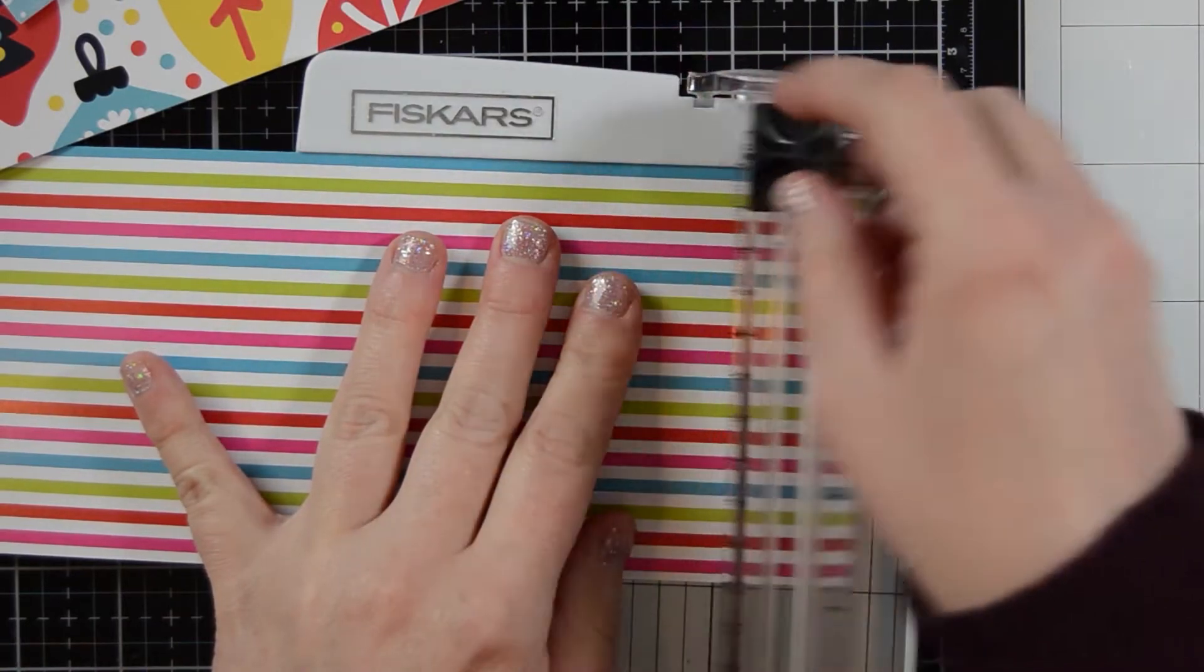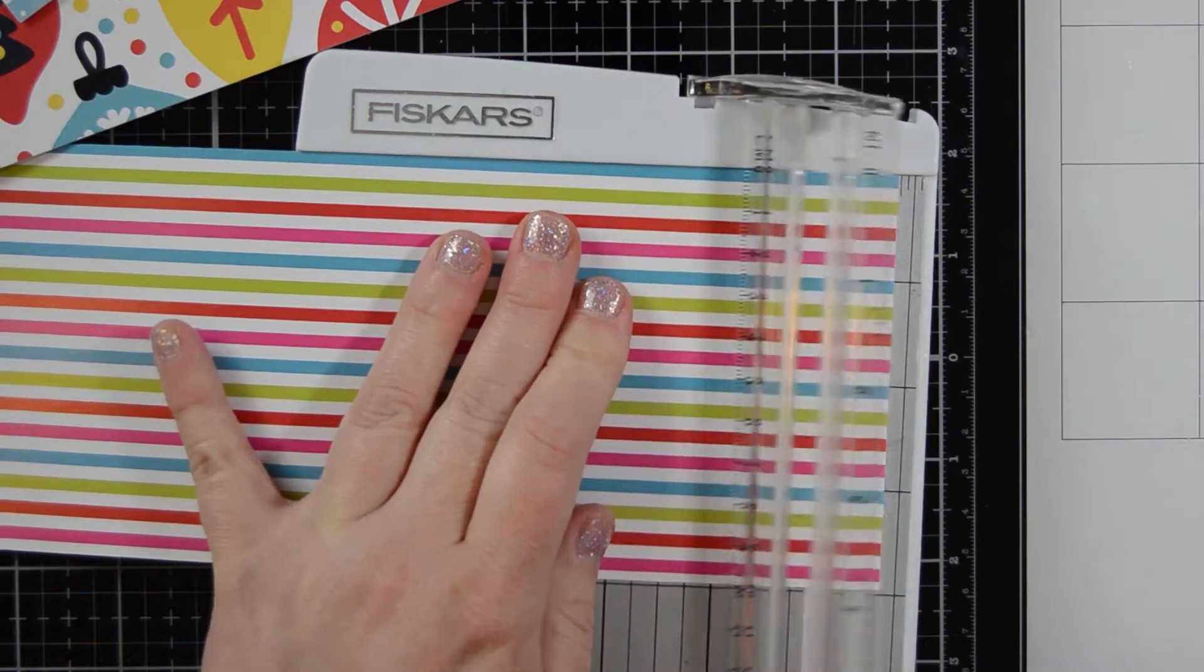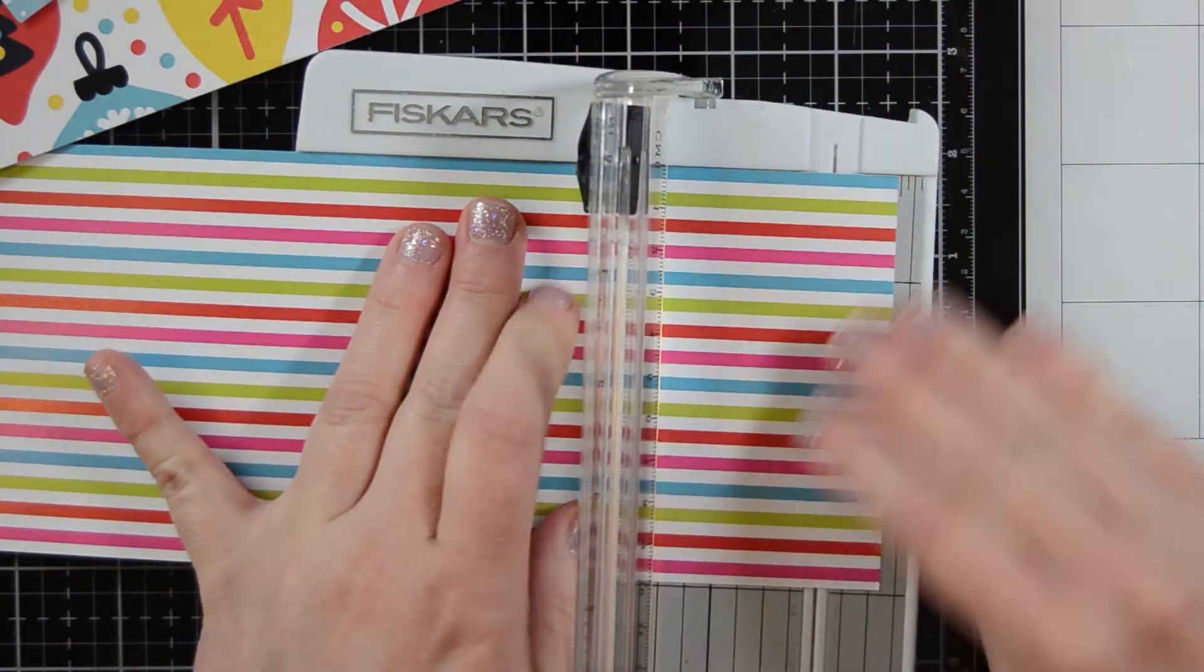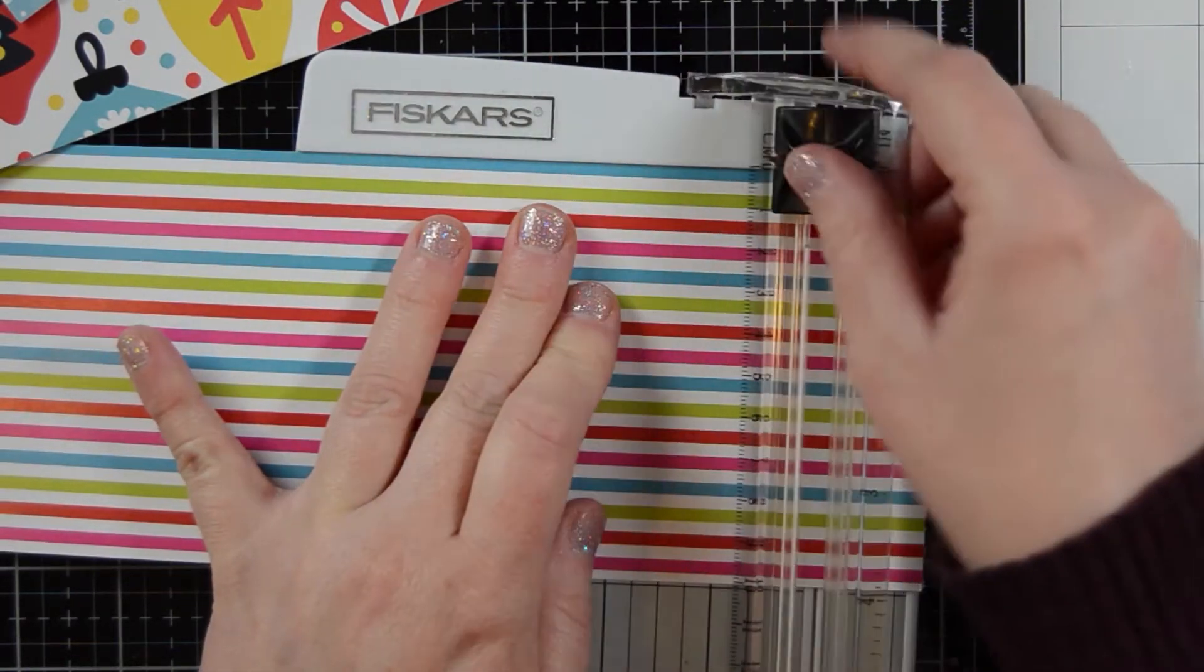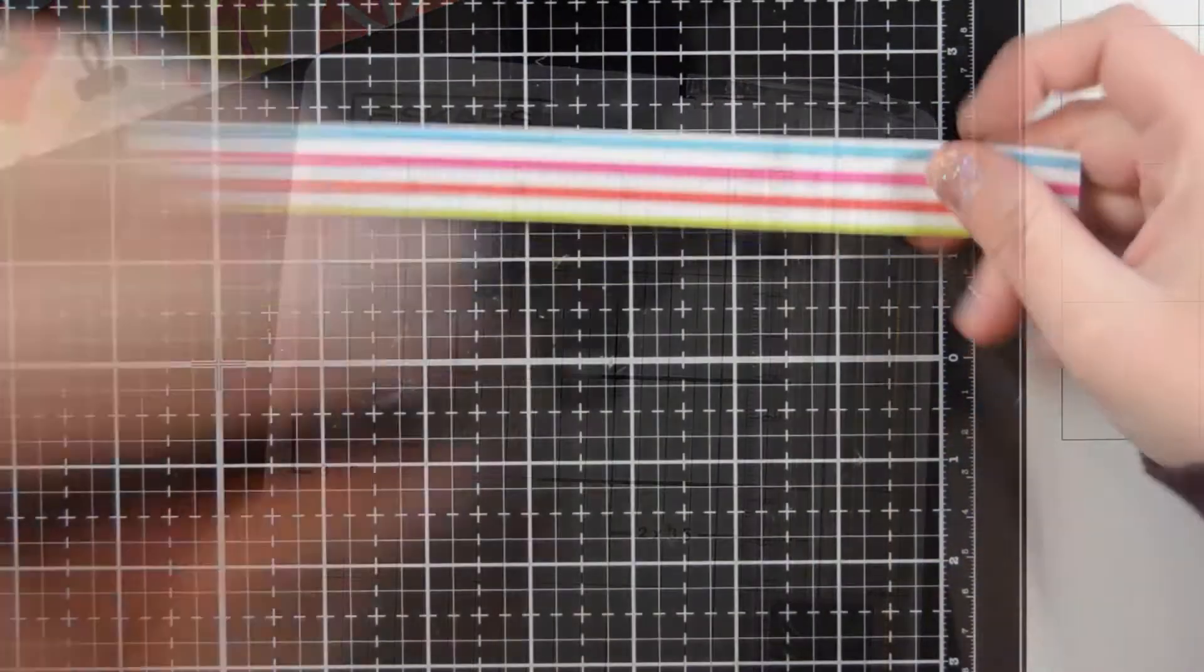So if you've never made a rosette before I will show you how here. So I've decided to score my paper at quarter inches all the way down. So you just score it down. You can use a score pal, whatever you have. I just like using my Fisker score blade.